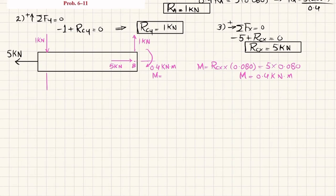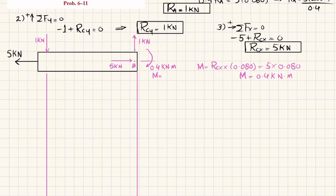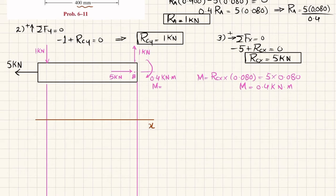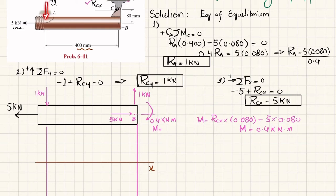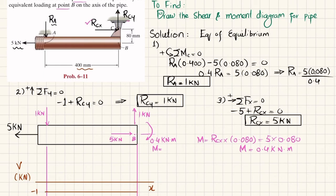For the shear force diagram, we draw a horizontal base line representing the 400 mm length. At point A, R_A acts downward, so the shear force starts at minus 1 kilonewton. Since there are no other vertical loads, the shear force remains constant. At the end, R_CY = 1 kilonewton acts upward, so minus 1 plus 1 brings it to zero. This is the shear force diagram.